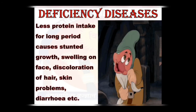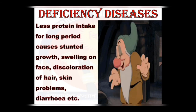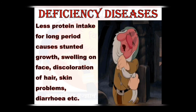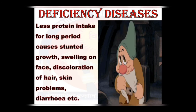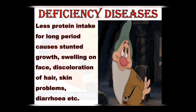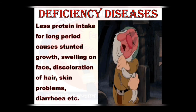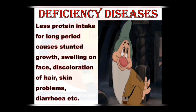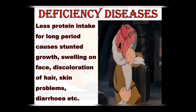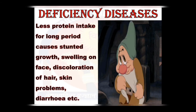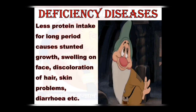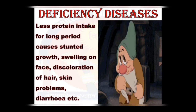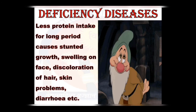If a person takes a diet rich in carbohydrates but no proteins, they may have different types of symptoms. You can see a picture — this is a smurf. Everyone knows smurfs are dwarfs, but why? Because they are not taking a protein-rich diet at the right time in their childhood. So they have stunted growth, swelled face, discoloured hair, skin problems, and diarrhea — all because proteins are required for all vital activities in cell formation and repair.